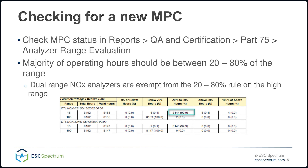I have my customers on a schedule that I do every year. In StackVision, I check the MPC status by going to Reports, QA and Certification, Part 75, and then selecting Analyzer Range Evaluation. From there, I view at least four calendar quarters worth of data. So if I'm doing it for a customer today, I'm probably going to do Q1 of 2023 all the way to Q1 of 2024. You should see the majority of operating hours between 20 to 80% of the range. If you have a dual range NOx analyzer, they're exempt from the 20-80 rule on the high range.